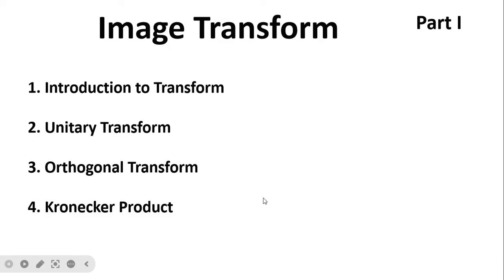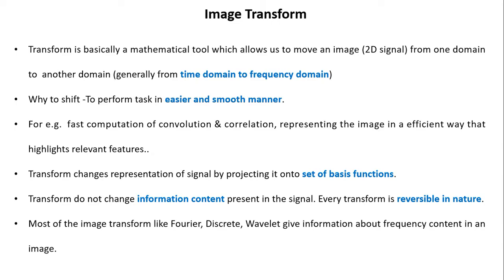A transform is basically a mathematical tool which allows us to move an image from one domain to another domain — for example, from the time domain to the frequency domain. We do this to perform tasks in an easier, smoother, and more efficient way — for example, fast computation of convolution and correlation, and representing the image in an efficient way that highlights relevant features. A transform changes the representation of a signal by projecting it onto a set of basis functions.